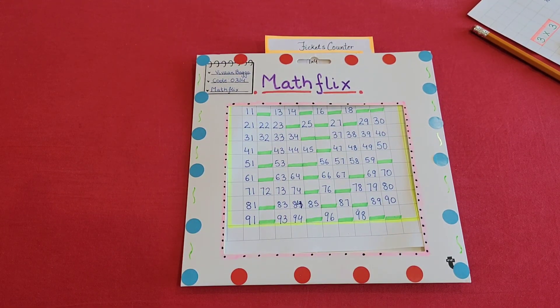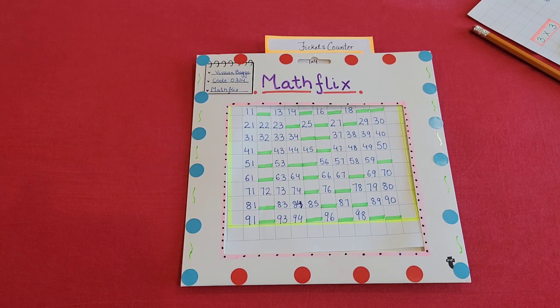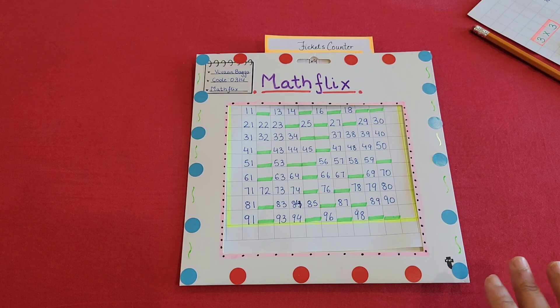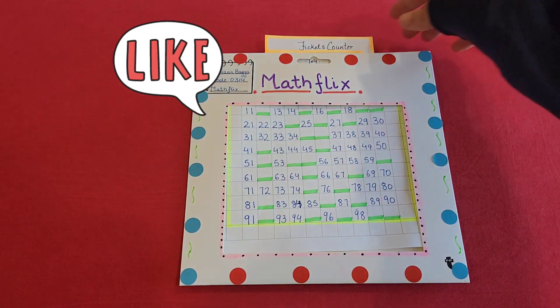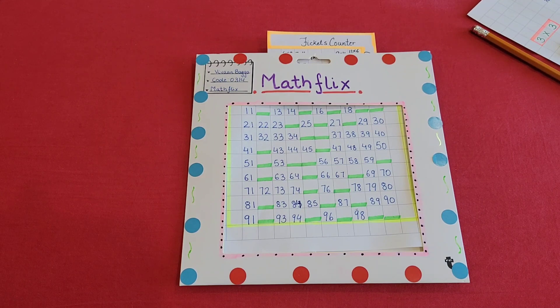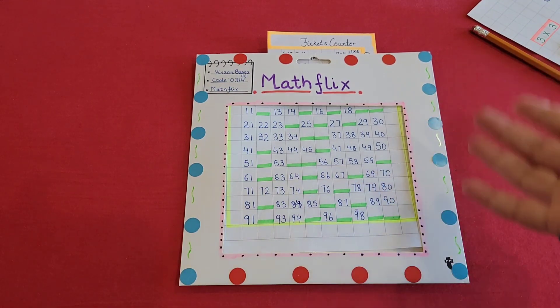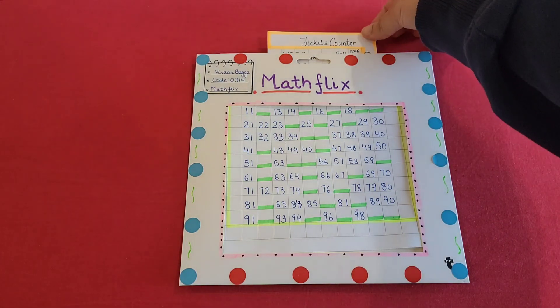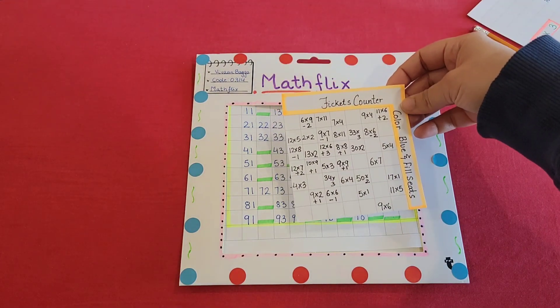Moving on to the next one. All right, so my third activity for the Math Flix is the Math Flix Theater. There is an arena which is completely filled here with different numbers and you have a ticket counter right here. All right, so the empty spaces that you see with the green dash right here are the numbers that are missing. So definitely we are not doing just the missing numbers, we are looking at as a point of view as a ticket counter.